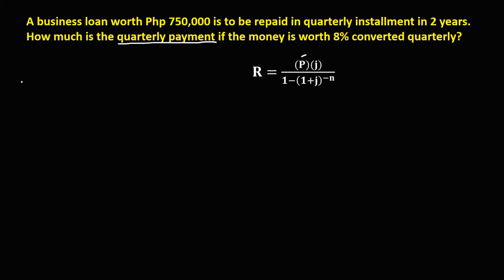So for P, the present value, since the loan amount is 750,000 pesos, the present value is 750,000.